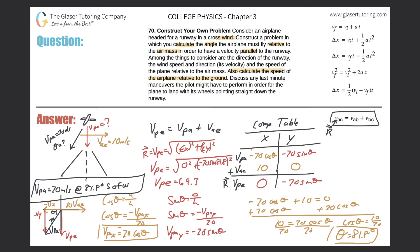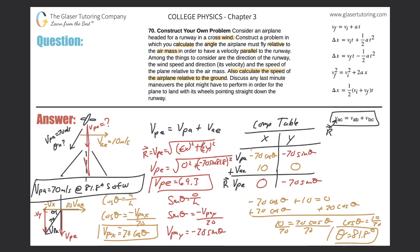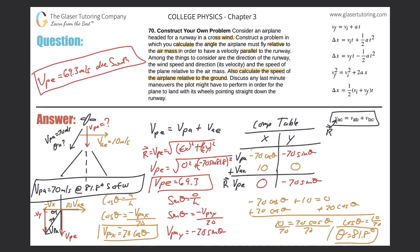The magnitude is 69.3 meters per second, and that should make sense — it's a little slower than 70, because part of the 70 m/s airspeed has to overcome the crosswind. The velocity left to travel parallel to the landing strip is slightly less. The velocity of the plane relative to the earth is 69.3 meters per second due south.